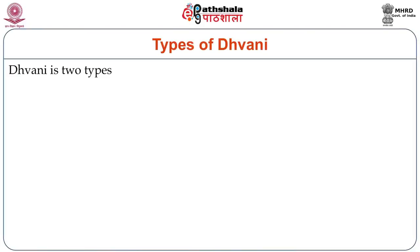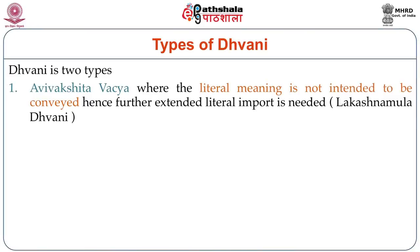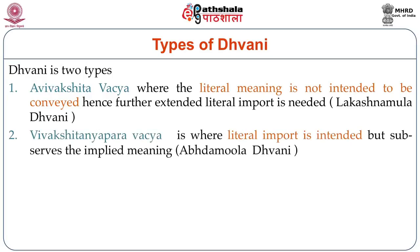Dhvani is of two types. Avivakshita vachya is where the literary meaning is not intended to be conveyed, but a further extended literal import is needed — this is called Lakshanamula Dhvani. Vivakshita nyaparavachya Dhvani is where the literary import is intended but subserves the implied meaning — this is called Abhidhamula Dhvani, where Vachyartha gives direct meaning and the suggestive meaning is explained.